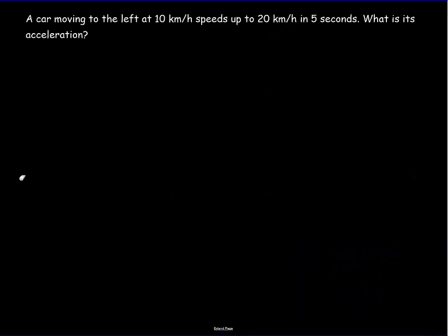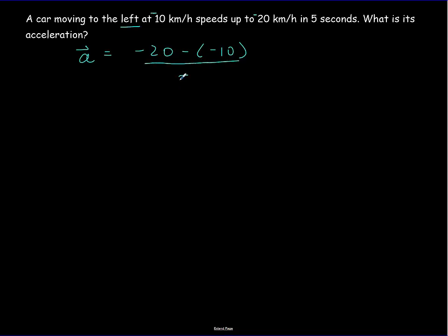Things are a little different when we include directions. Because the object is moving to the left, this is −10 km/h. Since it's speeding up, it's going −20 km/h. The acceleration is −20 minus −10, over five seconds: −10 km/h in five seconds, giving an acceleration of −2 km/h every second.